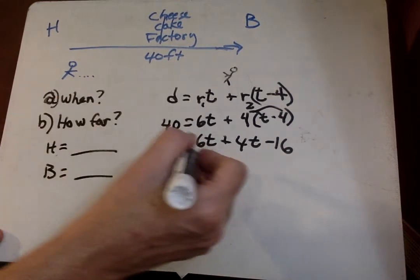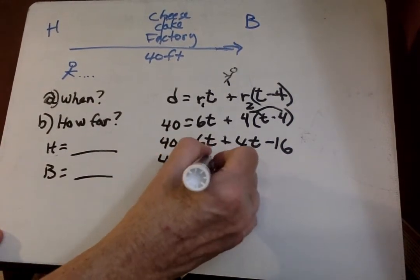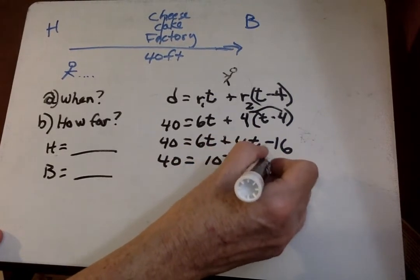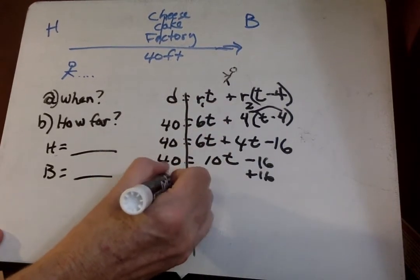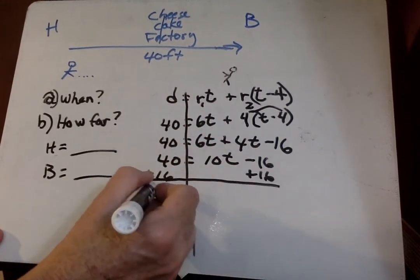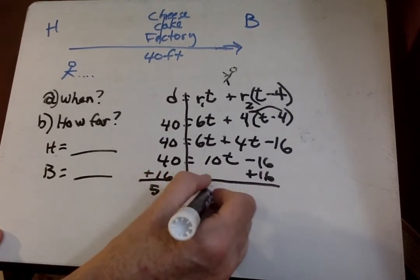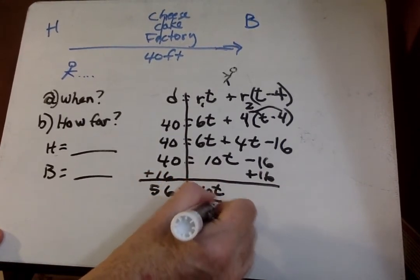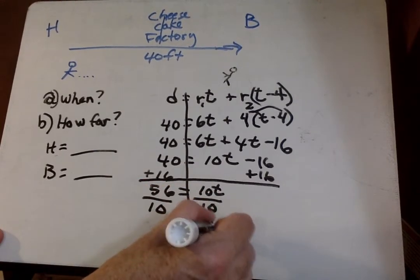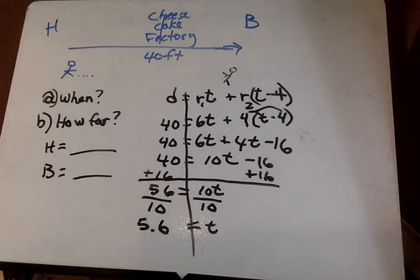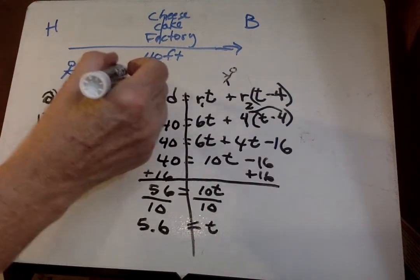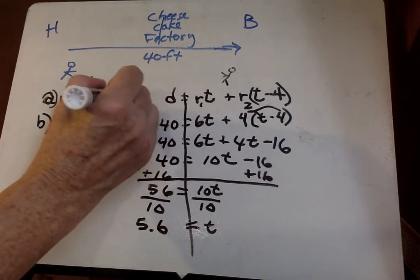Then we go ahead and we combine like terms. I add 16 here, and I really should add 16 here. 56 equals 10t, and we divide by 10. So, we know that the time takes 5.6 seconds. So, we can say it takes 5.6 seconds for them to reach each other.